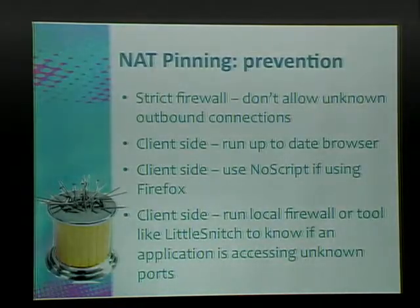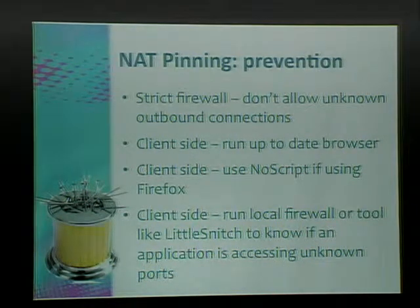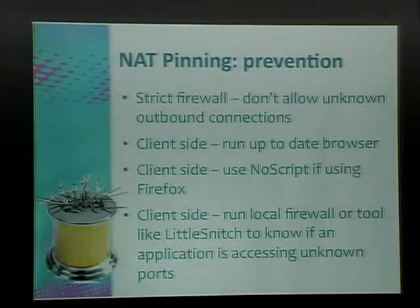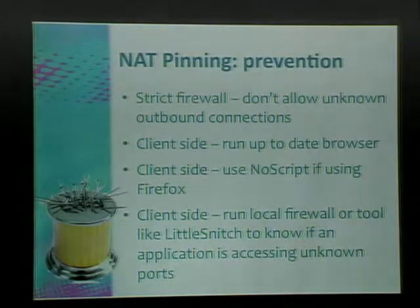How do we stop NAT pinning? How do we prevent this from happening to our own systems or networks? A couple of things: if you can, have a strict firewall — don't allow outbound connections you don't know of. For example, if you don't have children at home, block port 6667. Client side, run an up-to-date browser — browsers are always coming out with new security features and bug fixes. If you're using Firefox, use NoScript. As soon as NAT pinning came out, the next day they added NAT pinning prevention to NoScript. Also use something like Little Snitch if you can — it's for OSX and will alert you when Firefox tries to communicate on port 6667. Essentially, you want multiple layers of protection.